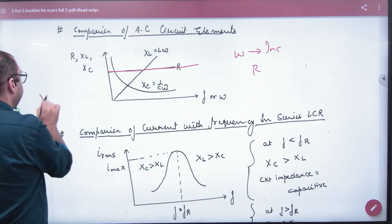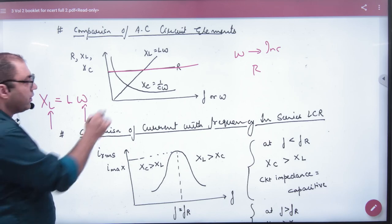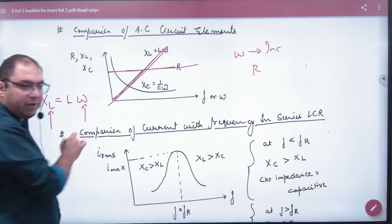And XL value: if you increase omega, XL will increase. This is a straight line passing from the origin.